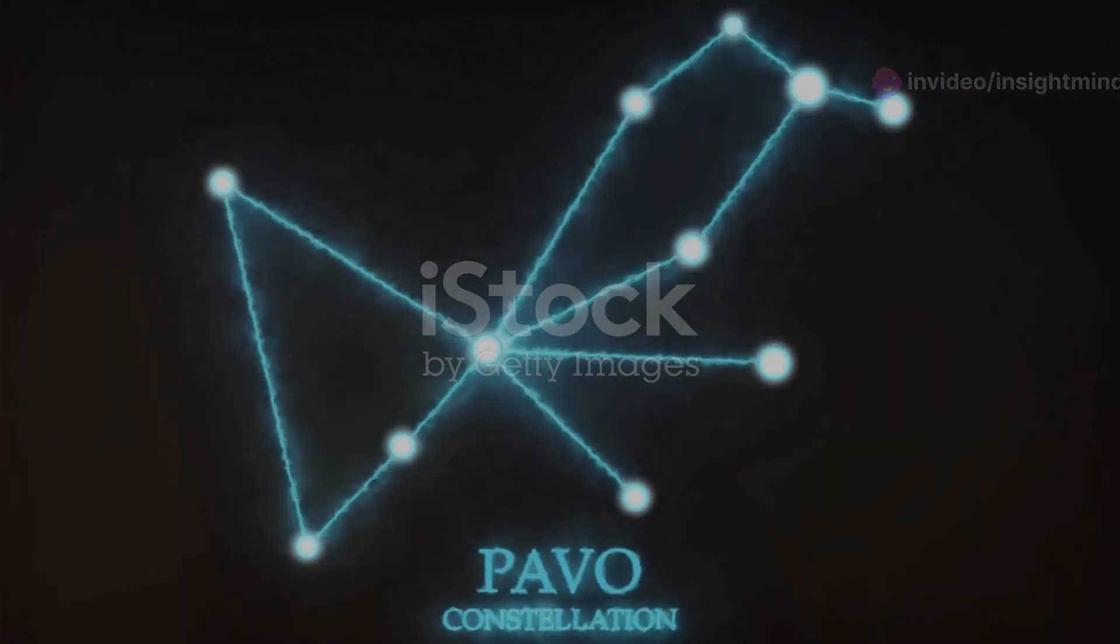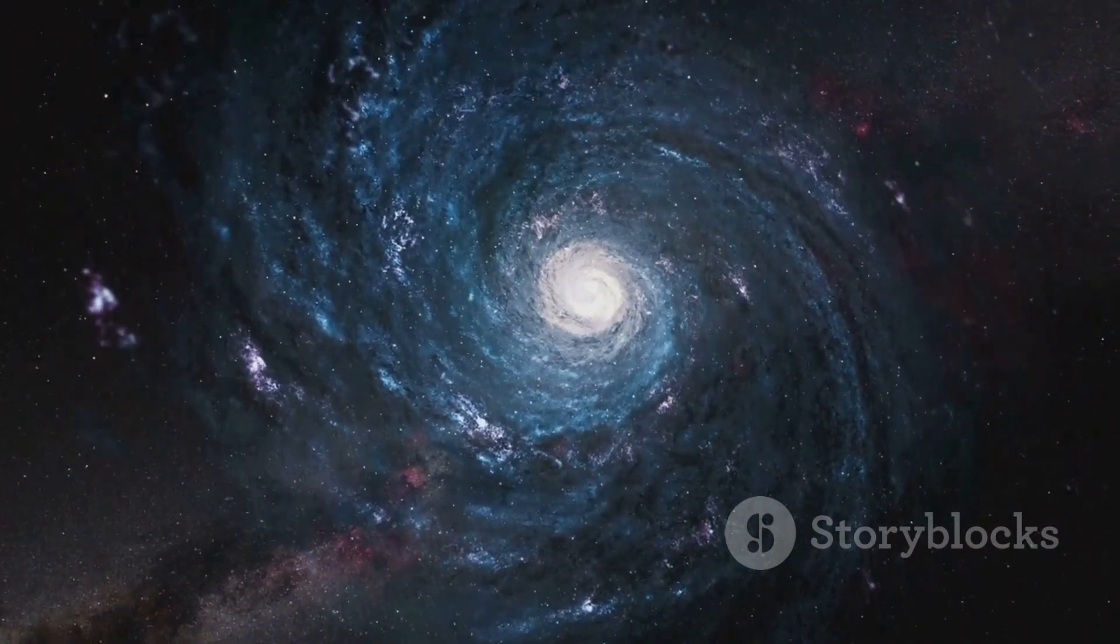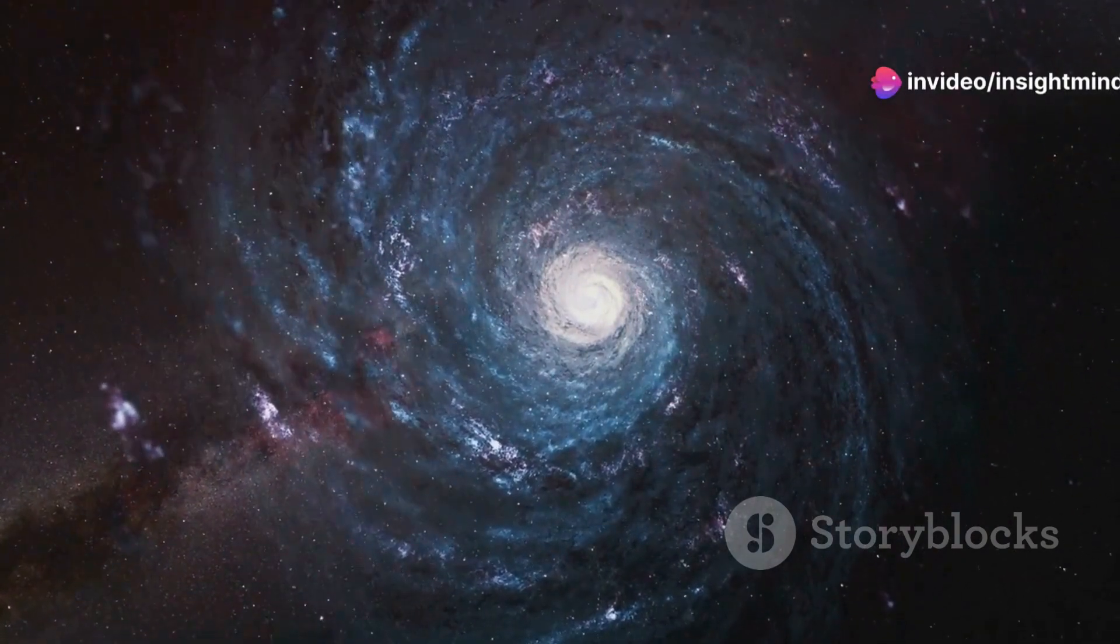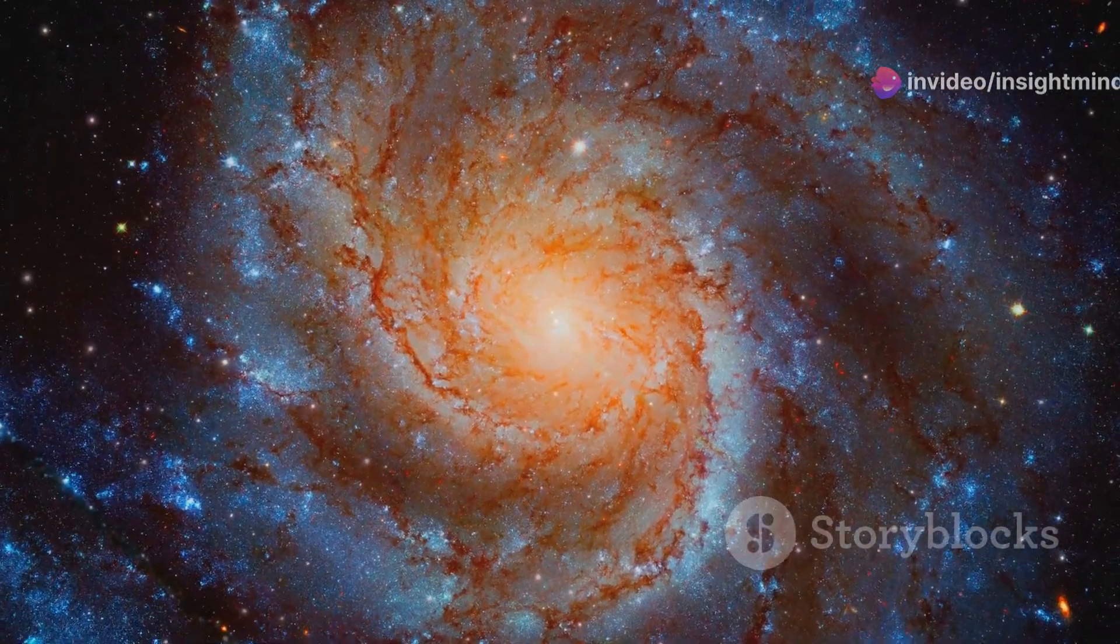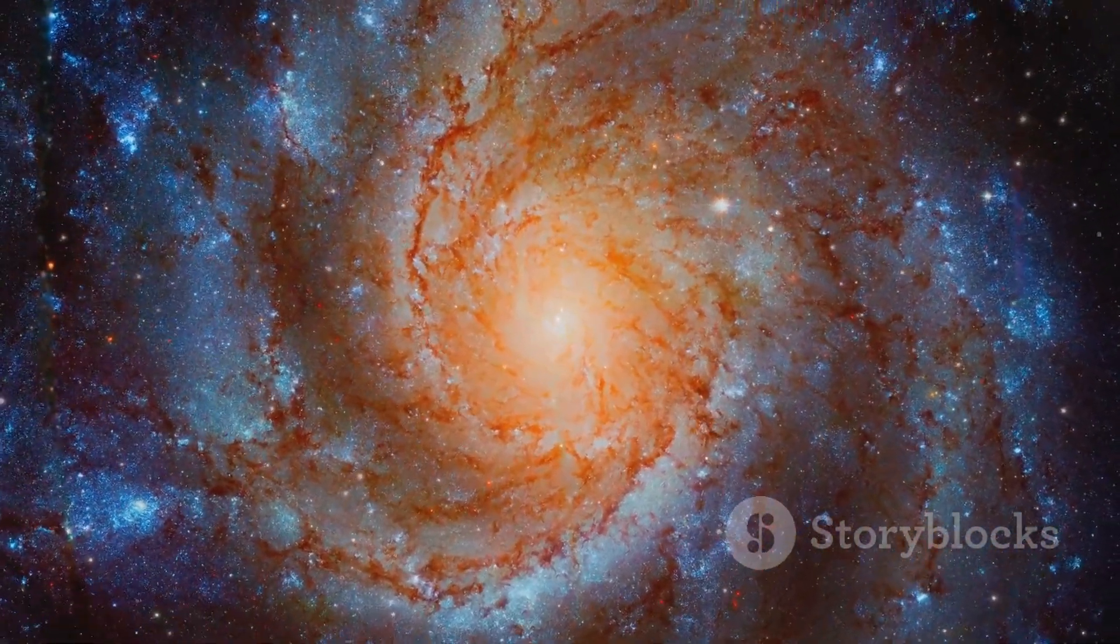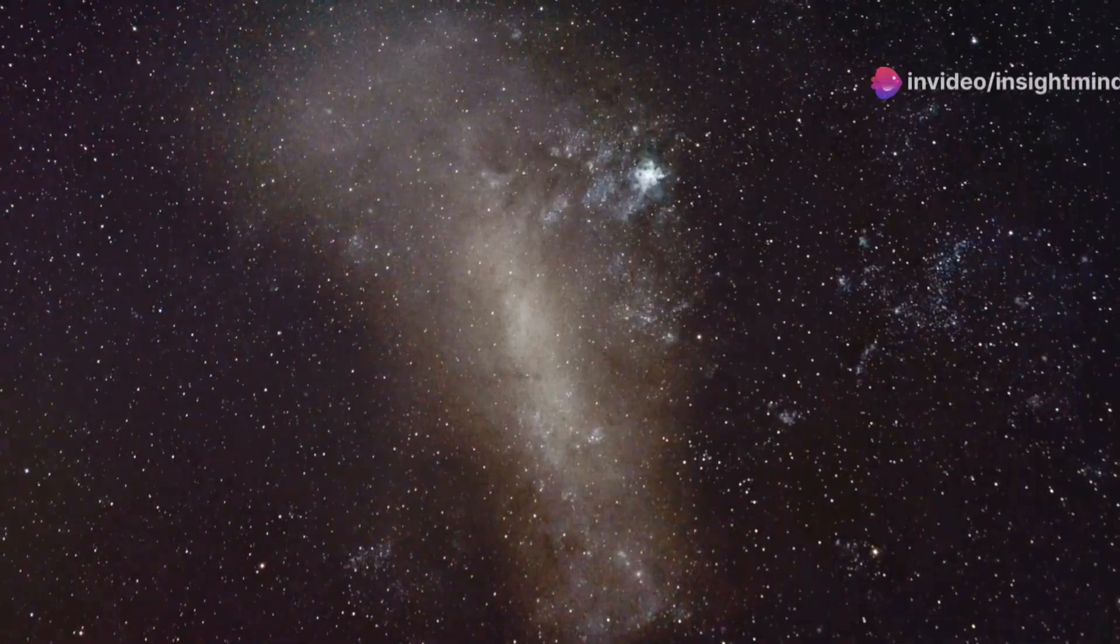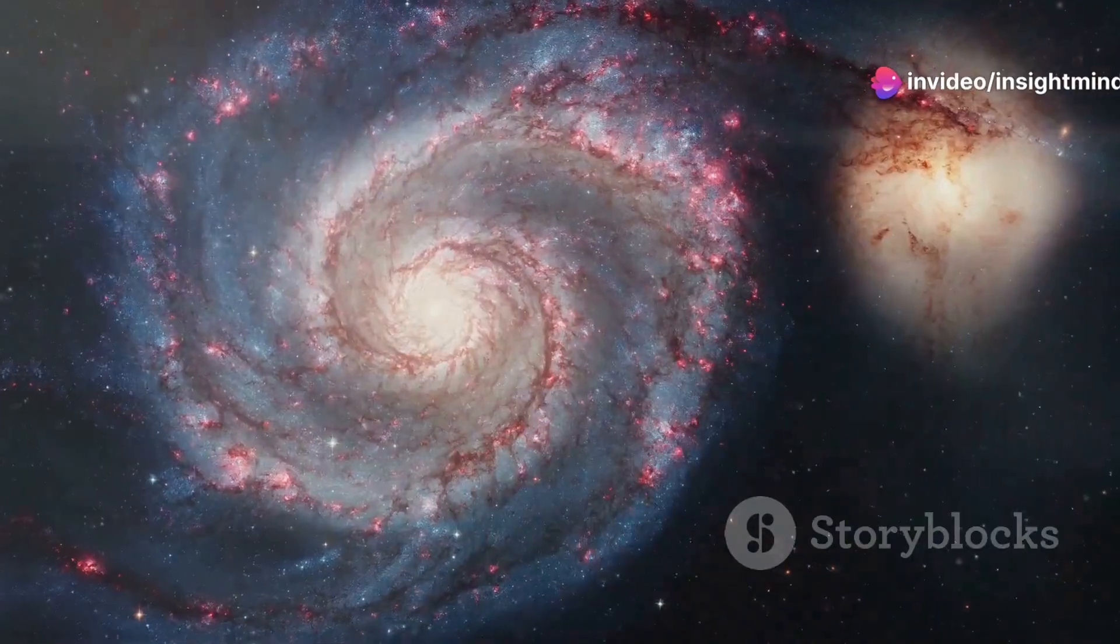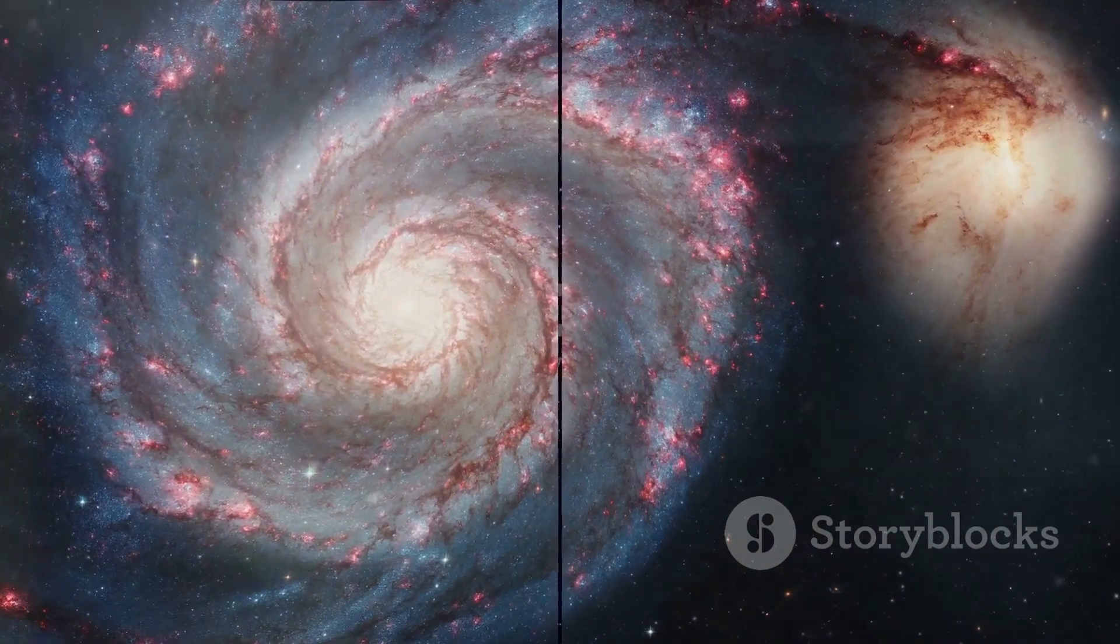Our cosmic journey now takes us to the constellation of Pavo, where we encounter NGC 6744, a galaxy that offers a tantalizing glimpse into our own galactic backyard. NGC 6744 is a barred spiral galaxy, much like our own Milky Way, with a similar structure and composition. It even has a companion dwarf galaxy, much like our own Magellanic Clouds, further adding to the similarities between these two distant islands of stars.